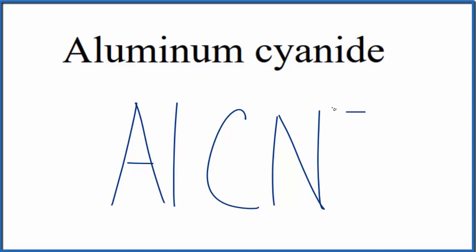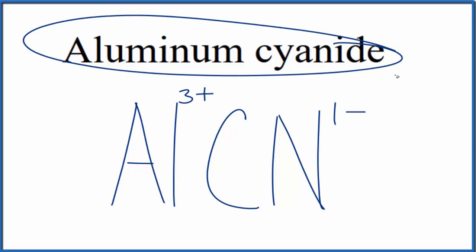We already know the cyanide ion has an ionic charge of 1-, and that's for the whole cyanide ion here. Aluminum, that's in group 13, sometimes called 3A on the periodic table. That has an ionic charge of 3+. So since aluminum cyanide is neutral,